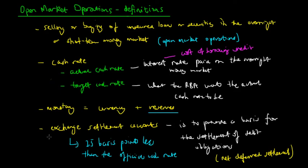What these banks do is keep a sufficient but not excessive amount of money in their Exchange Settlement Accounts to avoid losing money. When they have a surplus of funds in the ESA, they then start to trade in the overnight money market, which has an interest rate equal to the actual cash rate.